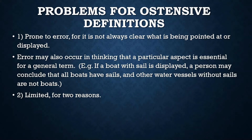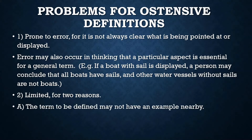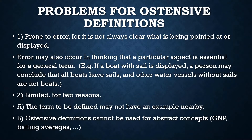Ostensive definitions are also very limited for a couple of reasons. First, the term to be defined has to be around to point at — you have to have an example nearby in order to display it. Second, ostensive definitions can't be used at all for abstract objects. If you try to point to the gross national product, you will fail. You can't point at batting averages or other abstract concepts. So ostensive definitions are quite limited because of this.